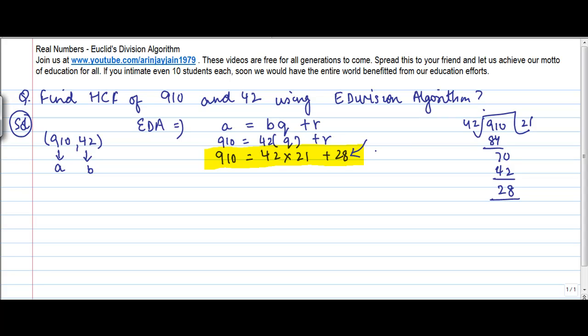Now my R is not equal to 0, so I move to step 2. In step 2, what is A? A is equal to what was B in the earlier theorem. So A equals 42 and B is the remainder, which is 28. So I write it: 42 equals 28 into 1 plus 14. That's fairly easy.